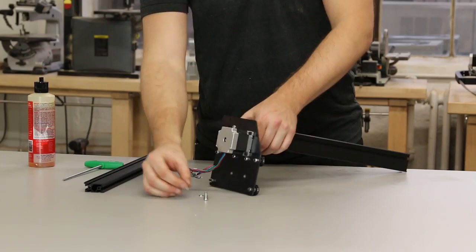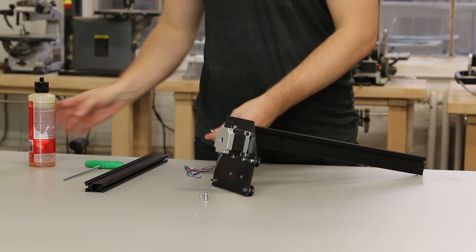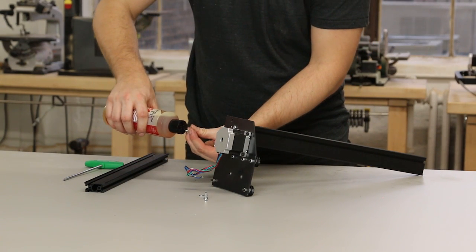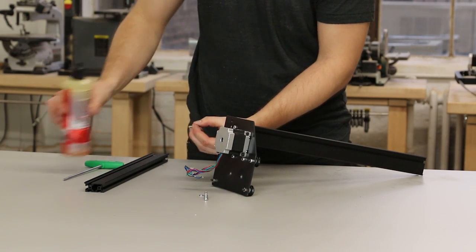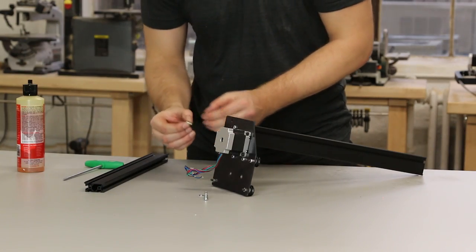When the screw head finally gets to the motor plate, there's no reason to get it very tight at this moment. It will be easier to line up the second hole if you leave it a little loose.